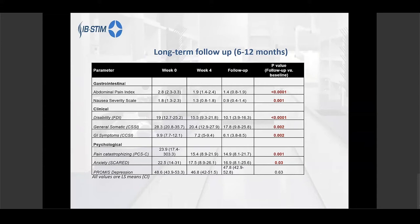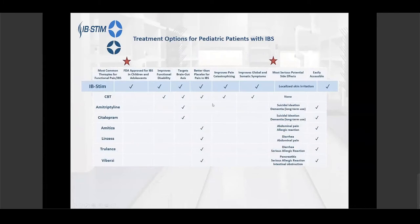The effect is sustained at six to twelve months of follow-up even after just one cycle — four weeks of treatment — with persistent improvement in the pain index, disability index, and general somatic symptoms. The IB STEM device is FDA-approved for patients aged 11 to 18 years and is the only FDA-approved device for that indication. The other medications we use are not FDA-approved for IBS management; importantly, antidepressants carry risks of increased suicidal ideation and long-term dementia risk, while channel blockers can cause diarrhea.